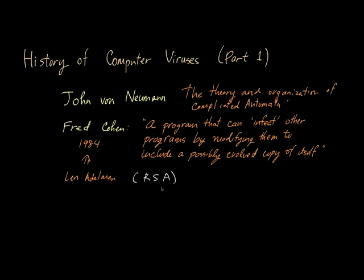Now Cohen actually defined a computer virus as, quote, a program that can infect other programs by modifying them to include a possibly evolved copy of itself. And really the idea here by this definition is that viruses are not going to be standalone programs. The idea is you might have a legitimate program, and what the virus is going to do is copy itself into that program and be a parasitic infector.